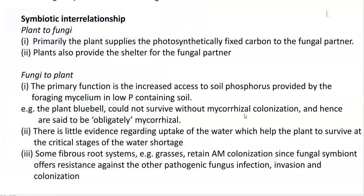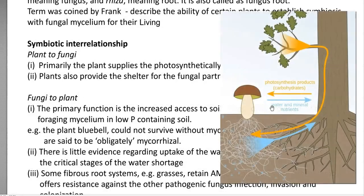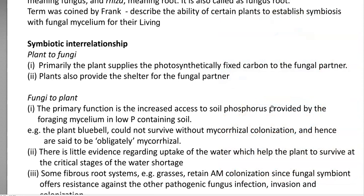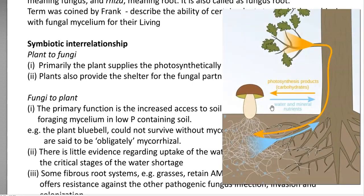Now we try to understand the symbiotic interrelationship existing between the fungal partner and the plant system. Primarily the plant supplies photosynthetically fixed carbon to the fungal partner. The plant fixes atmospheric carbon dioxide into cell carbon, and more than 60 to 70 percent of that fixed carbon can reach the soil system through root exudates. Those root exudates act as a carbon source and support the fungus in the rhizosphere region.